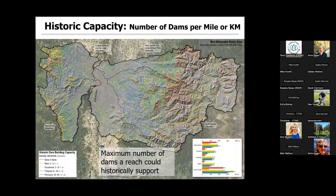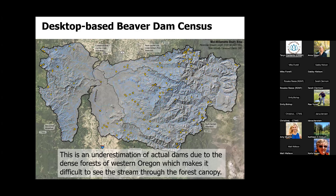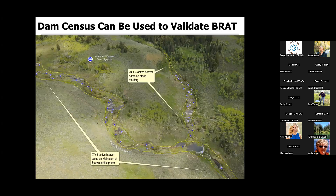One way to validate this is desktop censuses to come up with densities based on what's actually on the landscape. In western Oregon this is tough due to dense forest canopy making it difficult to see the stream. This works great in settings like the Intermountain West where it's open. Each blue dot is a dam, and you can basically get a dam count — say on this reach there's 27 plus or minus four or five dams, giving you a density estimate directly comparable to the BRAT model.